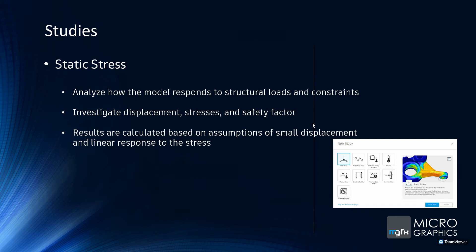There are quite a few different types of studies. The first one most people use is static stress, which analyzes how the model responds to structural loads and constraints — looking at displacement, stresses, and safety factor. These are things an engineer needs to know to understand how well a product will behave and ultimately whether it will break. Please note this is linear analysis — results are based on assumptions of small displacement and linear response, so nothing nonlinear like plasticity.